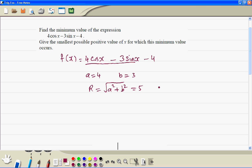Then alpha tan inverse, b divided by a, gives us 36.9 degrees.